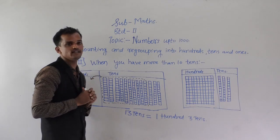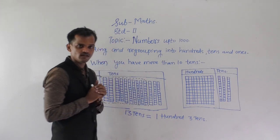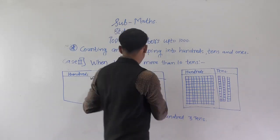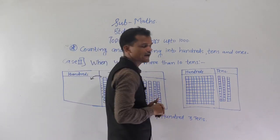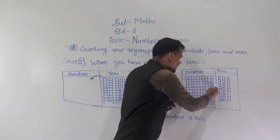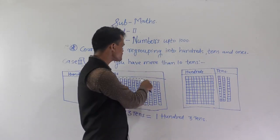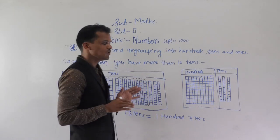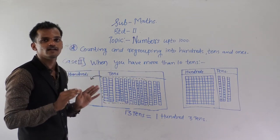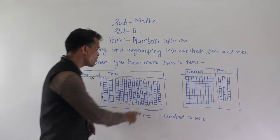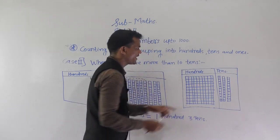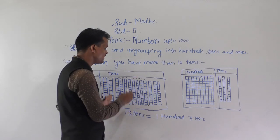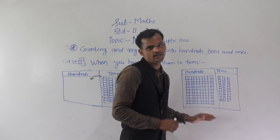How many 10s will remain? 1, 2, and 3. In the next figure, see here we have shifted these 10 tens into the 100s column, so we get 1 hundred and how many 10s remain? 1, 2, and 3. So 13 tens is equal to 1 hundred and 3 tens.